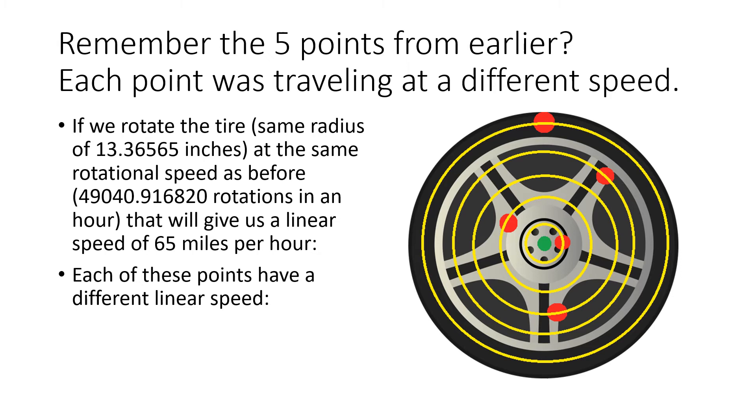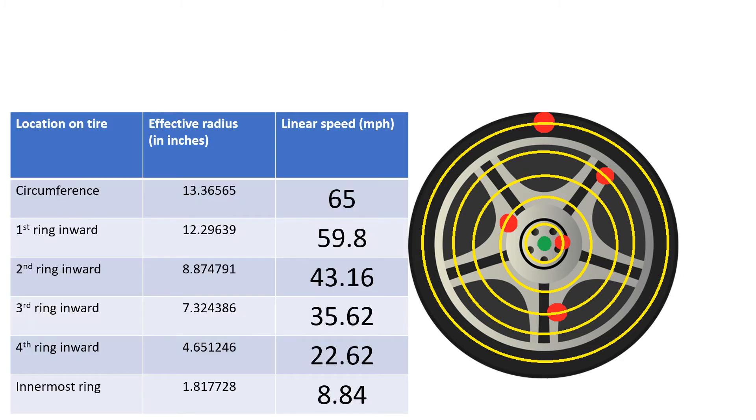Each of these points have a different linear speed. This table shows how each location on the same rotating tire, with its different radius, affects its linear speed.